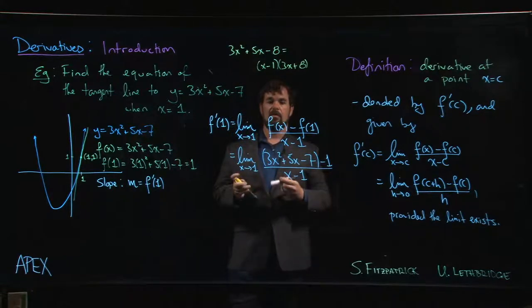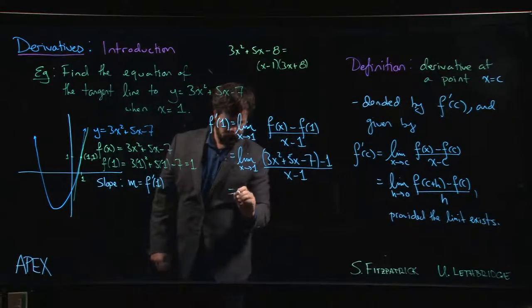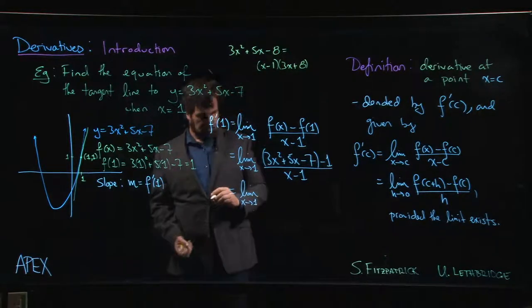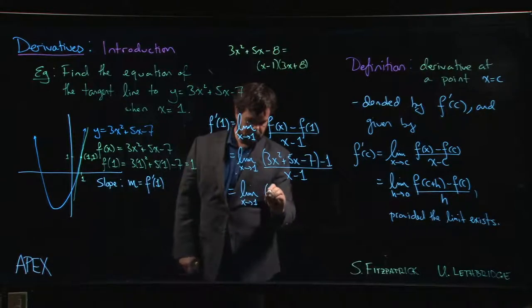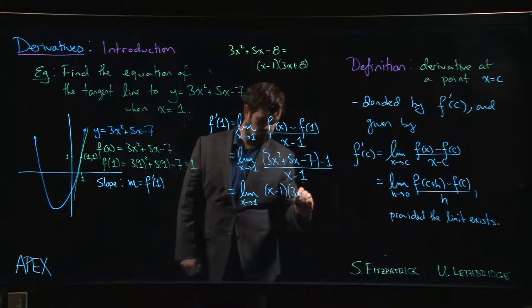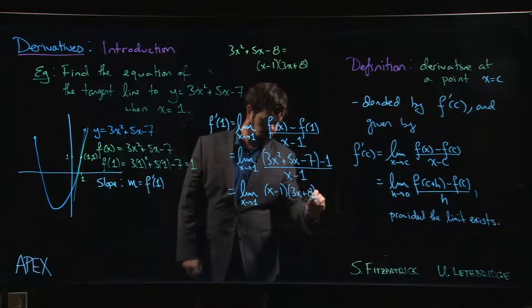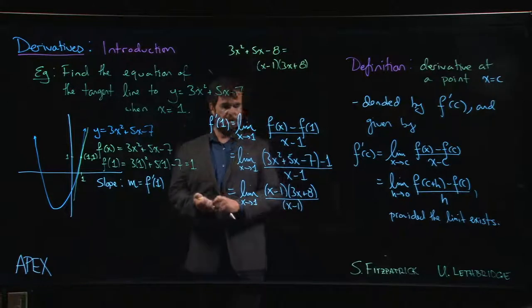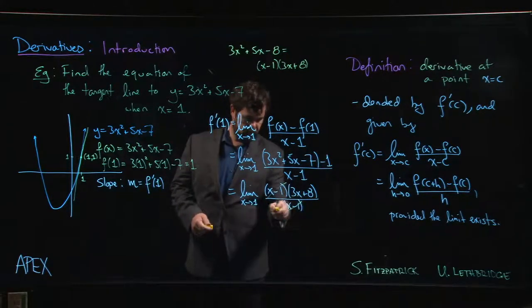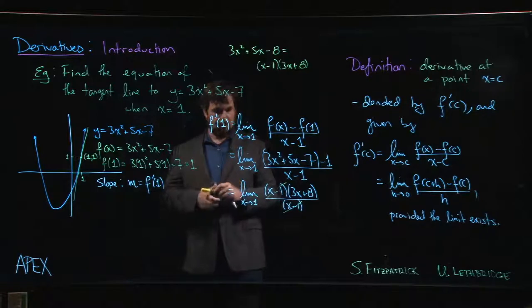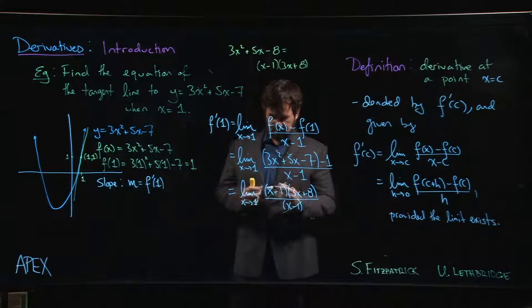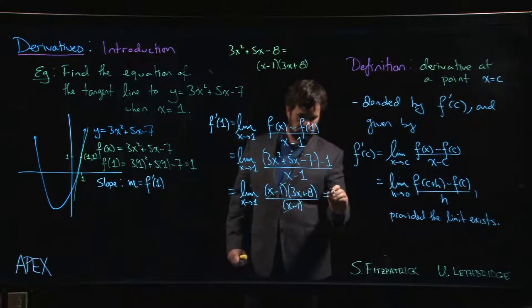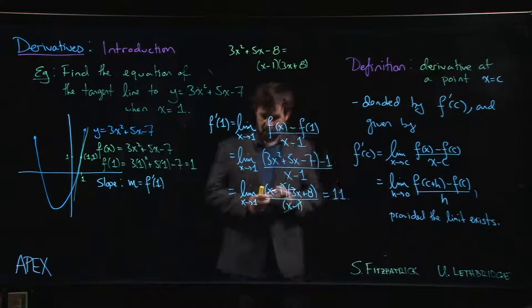So once we realize that, we can put that result in, so x minus 1, 3x plus 8 over x minus 1. And of course, the whole point is that the x minus 1 factors cancel, leaving us with the limit of 3x plus 8. And let's maybe skip a step and plug in x equals 1. We get 11 for our slope.